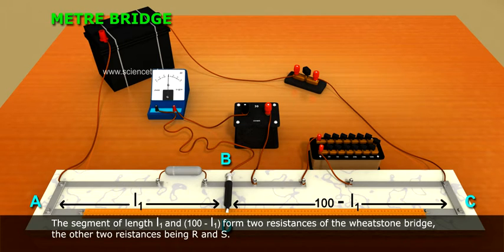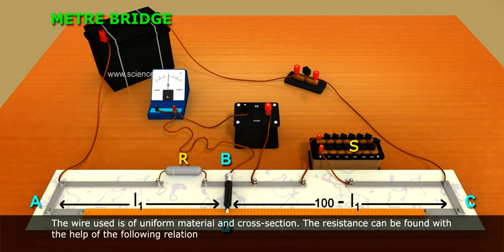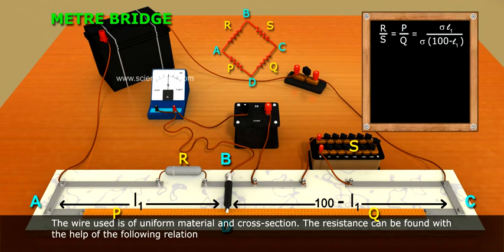The wire used is of uniform material and cross-section. The resistance can be found with the help of the following relation: R by S equals to P by Q equals to sigma l1 by sigma into 100 minus l1.